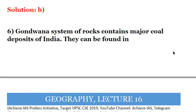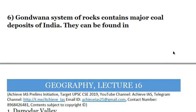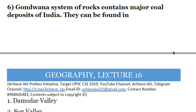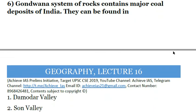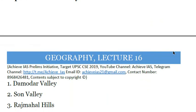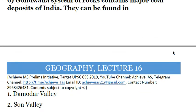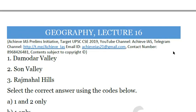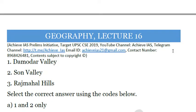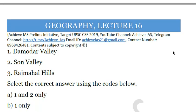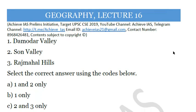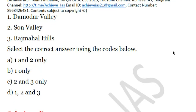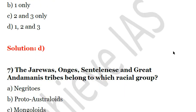Sixth question: the Gondwana system of rocks contains major coal deposits of India. They can be found in: one, Mahanadi Valley; two, Sone Valley; three, Rajmahal Hills. The Gondwana system of rocks contains coal deposits and they are found in all of the given locations, so the answer is D — one, two, and three.